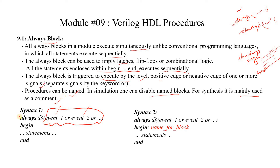Here is syntax 1: we have always at-sign, then event 1 or event 2, and there can be multiple events separated by the keyword OR. If any of the events occurs in the sensitivity list, this always block is going to be executed, and all statements between begin and end will execute. The second syntax for the always block has always at-sign with multiple events, then begin and end keywords where we can provide a name for that procedural block. By using that name and the disable keyword, we can enable or disable that particular block in our test bench.